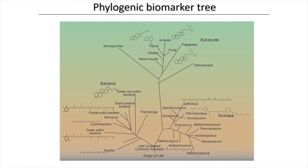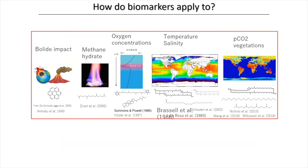We can say biomarkers are molecular fossils — very, very small. At a glance, this is how biomarkers work. We can reconstruct biotic impacts using these molecules, find methane clathrates derived from them, reconstruct oxygen concentration in the ocean, reconstruct temperature and salinity, and reconstruct pCO2. So organic molecular fossils are very useful to reconstruct paleoenvironment and paleobiota evolution.